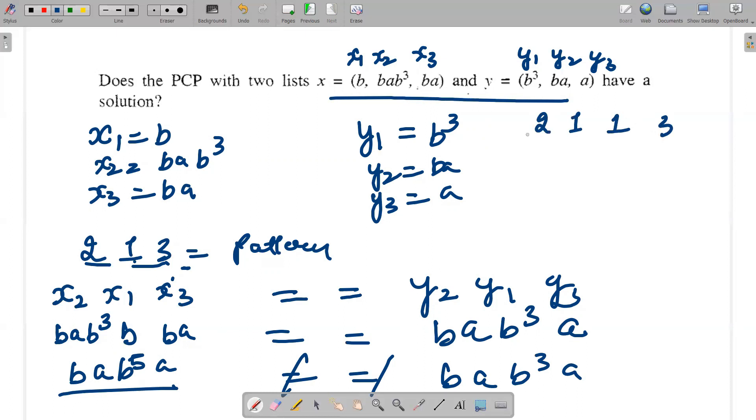Similarly, I can test another pattern as 2-1-1-3. I am writing x2, x1, x1, x3. I get the answer as bab³, b, b, and ba, so I get bab⁶a for x2, x1, x1, x3.